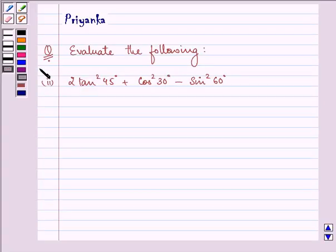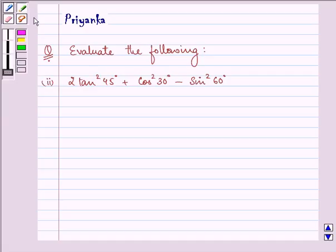Hi and how are you all? The question says evaluate the following. Here we need to evaluate 2 tan square 45 degree plus cos square 30 degree minus sin square 60 degree.